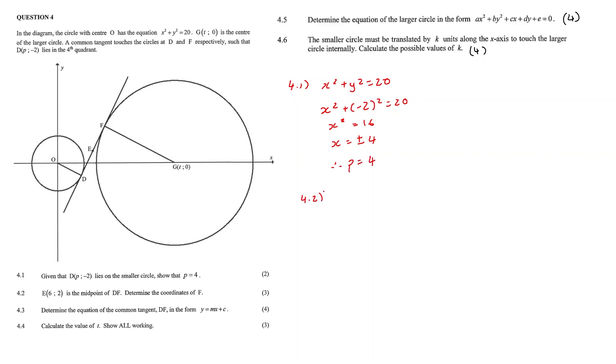Question 4.2: E with coordinates 6 and 2 is the midpoint of DF. Determine the coordinates of F. So since they say it's the midpoint, we can use the midpoint theorem. So for our x value, we can say 4 plus the x of F over 2 is equal to the midpoint value, which is 6 of E. And we get our xF value to be equal to 8.